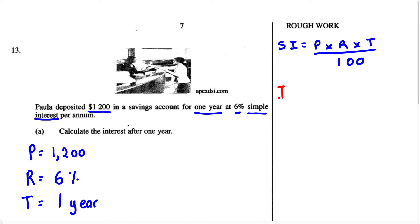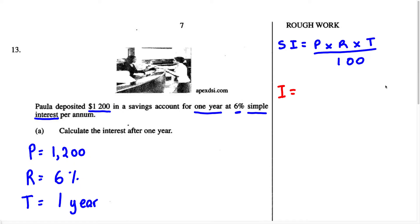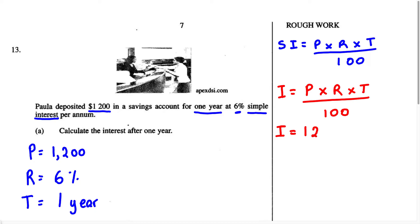Interest equals Principal times Rate times Time, all over 100. When we fill in the values, the principal is 1,200, multiplied by the rate which is 6, multiplied by the time which is 1. All of this is over 100.